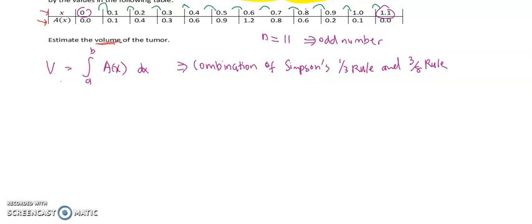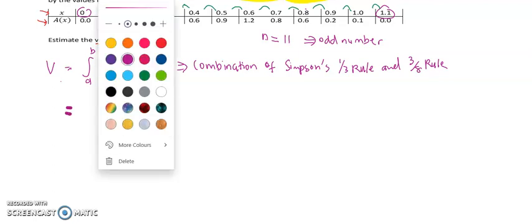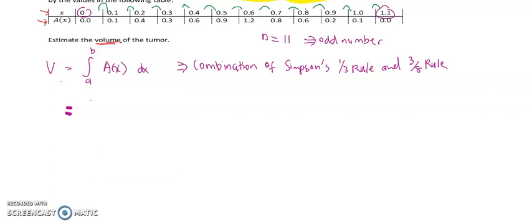The formula to calculate the volume of the tumor is the integration of A(x)dx from 0 to 1.1. Since we need to apply both rules, the formula will be the integration of A(x)dx from 0, and since our x goes to 1.1, for the first 8 intervals...